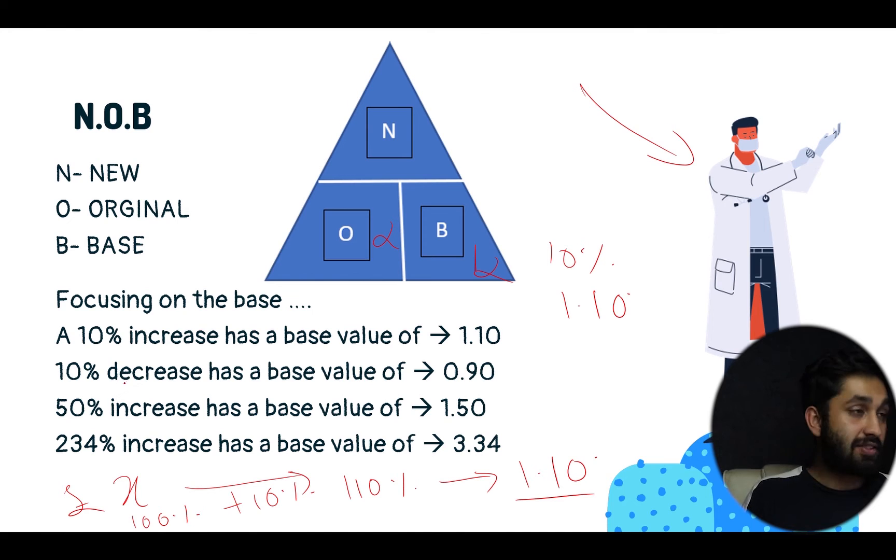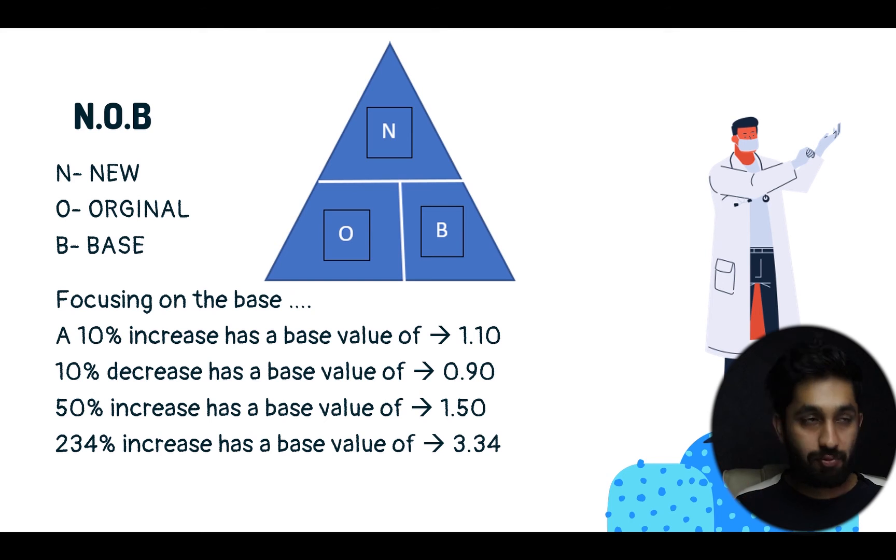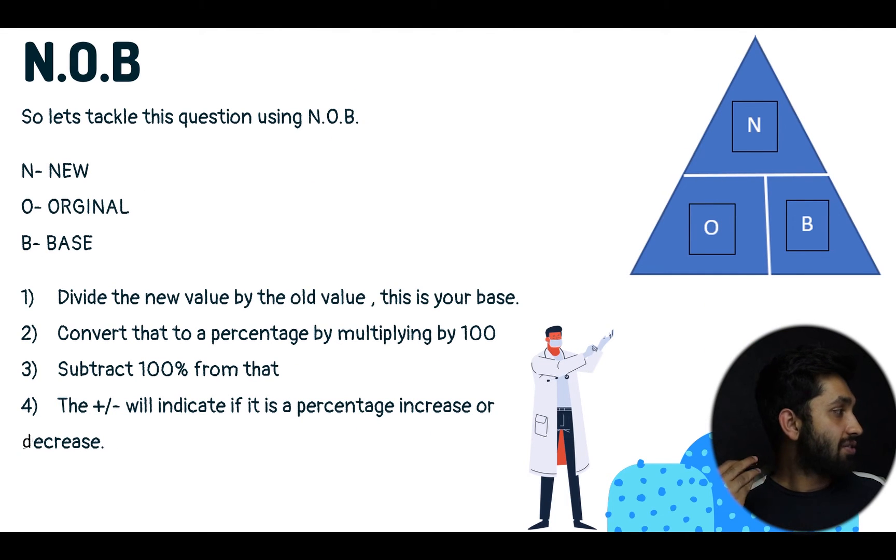Same again, if this dude bought like a car and he's going to resell it at a 10% decreased price, then obviously he bought it for an X amount, going to resell it but at a 10% reduced price. So minus 10%. Start off at 100%, minus 10% to give us 90%, and 90% as a decimal is 0.9. So then 50% increase has a base value of 1.5, and 234% increase has a base value of 3.34.